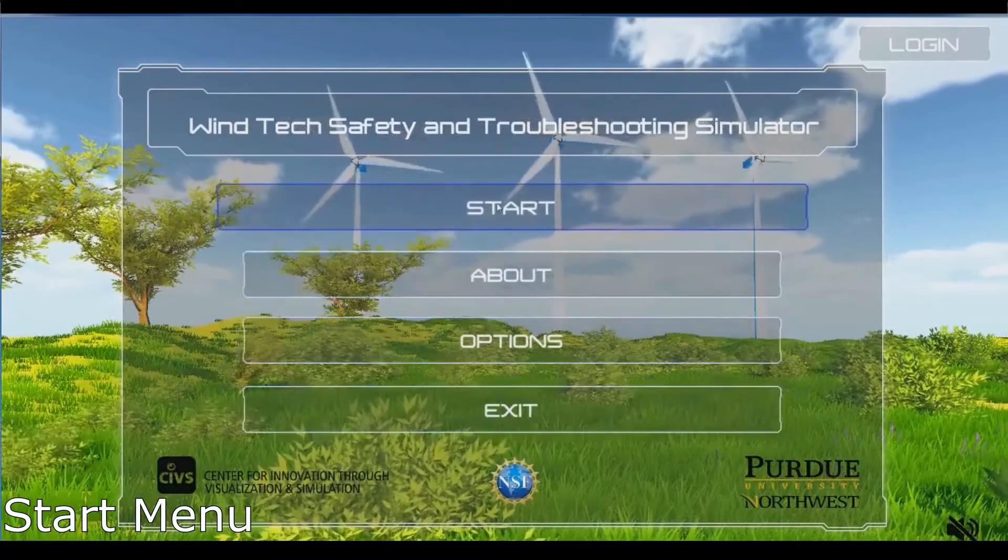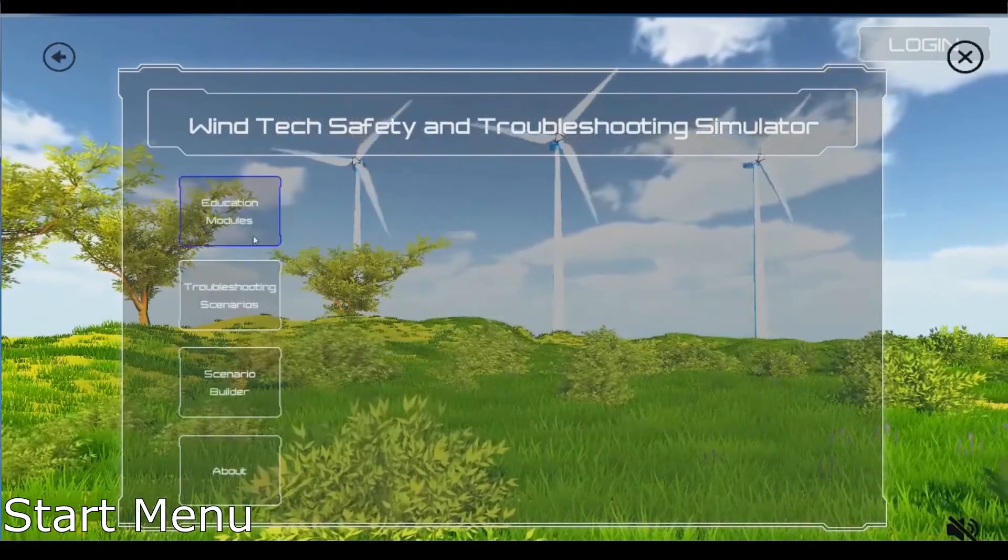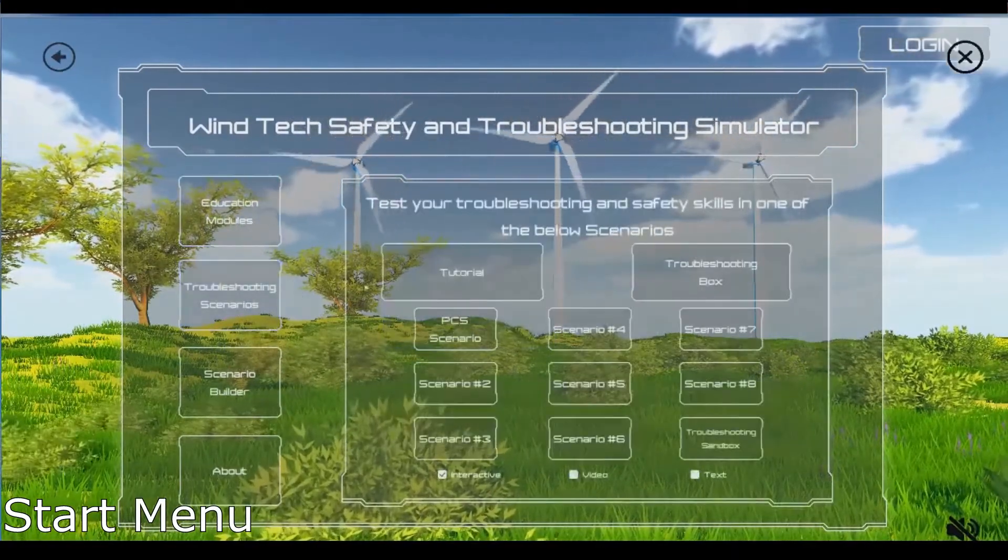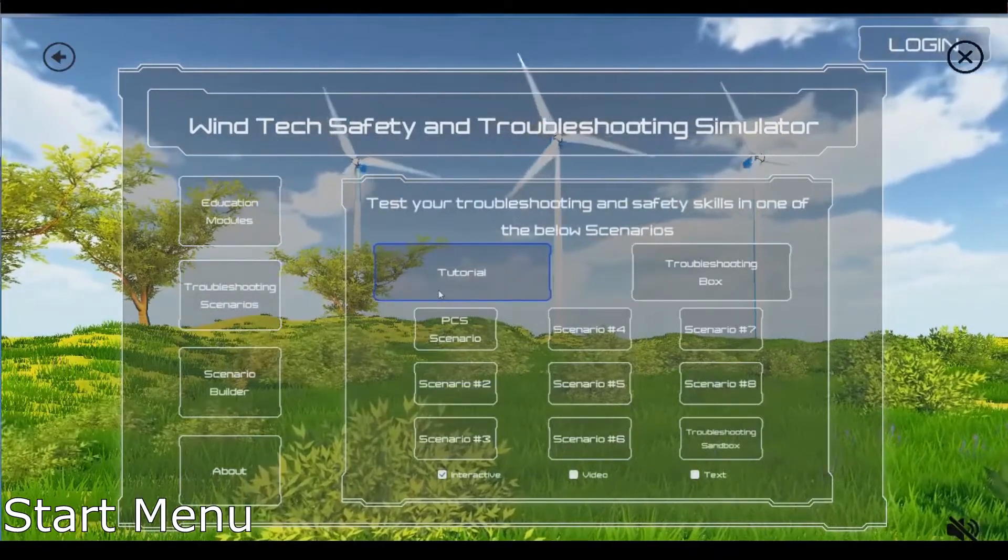The Wind Technician Troubleshooting and Safety Simulator is a training tool aimed at improving the wind energy workforce by enhancing current programs of virtual troubleshooting and educational modules.